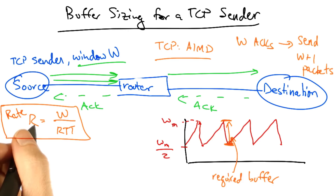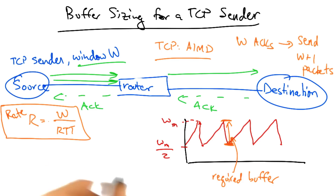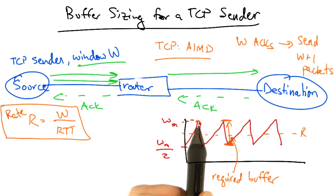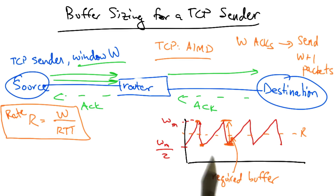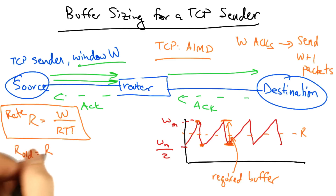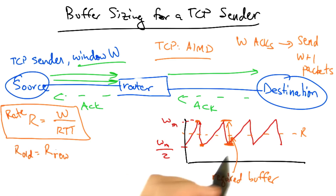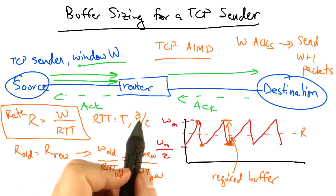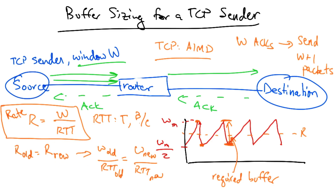Now we know the rate is W over RTT, and we'd like the sender to send at a common rate R. And if we'd like the sender to be sending at the same rate before and after it experiences a loss, then we know that the rate before the drop must equal the rate after the drop. So then we can set these two rates equal. We know that the RTT is part transmission delay T, and part queuing delay, which is the maximum buffer size of the bottleneck link divided by the capacity of the bottleneck link.